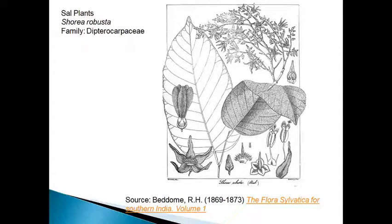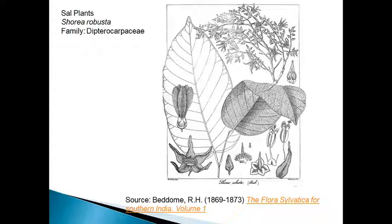Next is the Sal plant. Scientific name: Shorea robusta, of the family Dipterocarpaceae. This is a very important tree of the tropical dry deciduous forest, and it is a large tree.